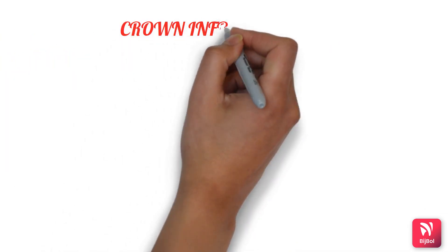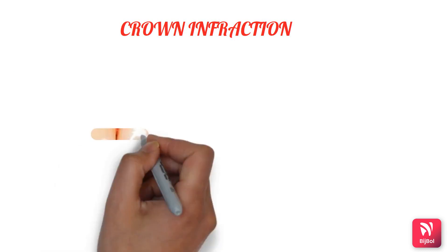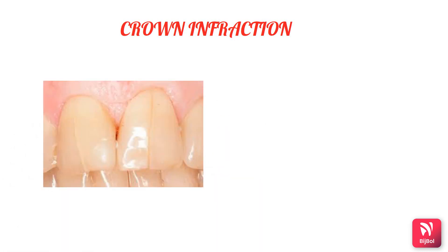Crown infraction is the incomplete fracture of the enamel without loss of tooth structure. This type of injury is very common but often unnoticed. It results in a fracture to the enamel appearing as a craze line running parallel with the direction of the enamel rods and ending at the DEJ.